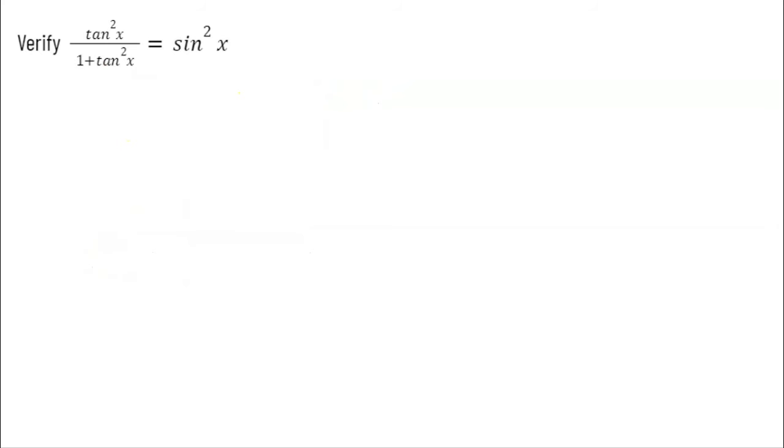In this question, we want to verify that tangent squared of x over one plus tangent squared of x equals sine squared of x. Now once again, I'm going to start with the more complicated side and I'm not allowed to move things side to side. Now right away, I'm like, wait a minute, one plus tangent squared, that looks awfully familiar. That's a Pythagorean identity manipulation. That's secant squared of x. So I get tangent squared of x over secant squared of x.